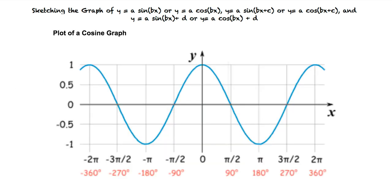Great work! Now let's do the same thing, but with the general graph of cosine. Looking at this image here, we can see the cosine graph crossing the x-axis at negative three pi over two, negative pi over two, pi over two, and three pi over two.